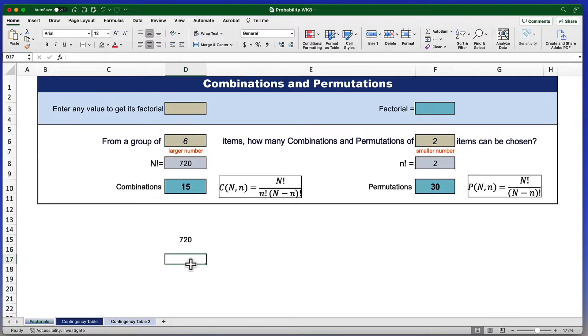Combinations use the formula equal sign, COMBIN, and this requires two arguments, the larger number and the smaller number. I'll put the larger number in first, comma, and that smaller number goes in second.